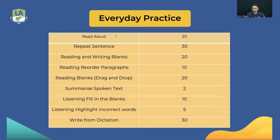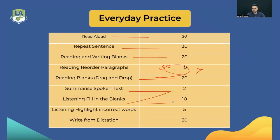Here is the recommended daily practice plan: 20 Read Alouds, 30 Repeat Sentences, 20 Reading Blanks, 20 Reading-Writing Blanks, 5–10 Reorder Paragraphs (if you're aiming for 6 or 7, don't worry about reorder), 2 Summarize Spoken Texts, 10 Listening Blanks, 5 Highlight Incorrect Words, and 30 Write From Dictations. After every three days, take a mock test.